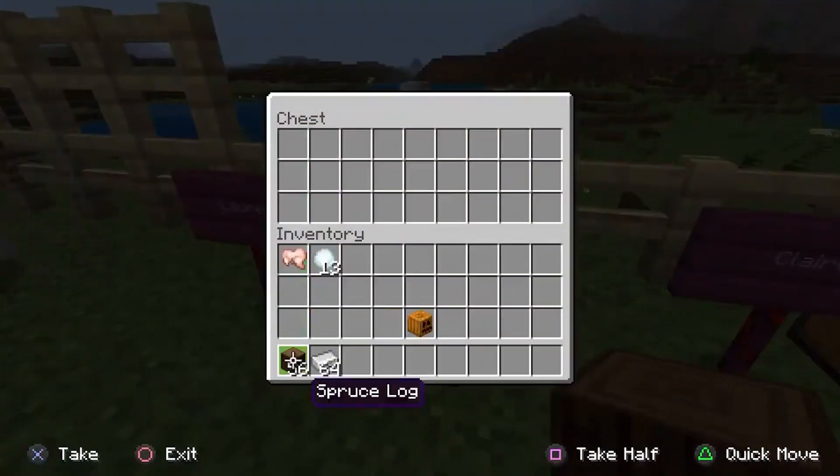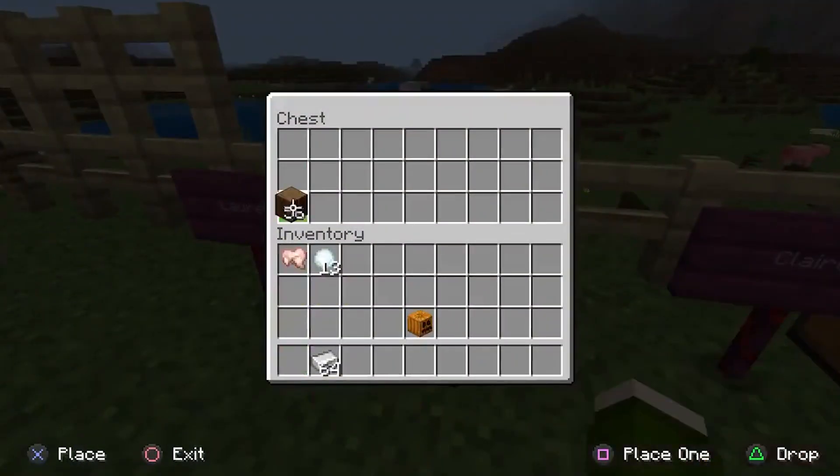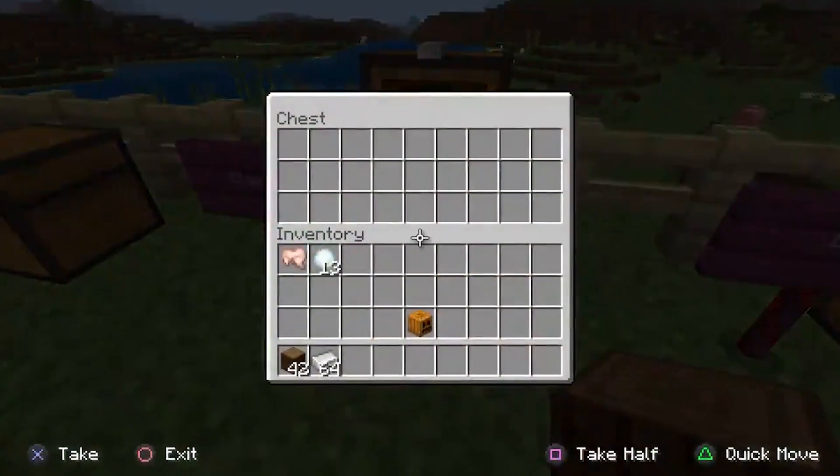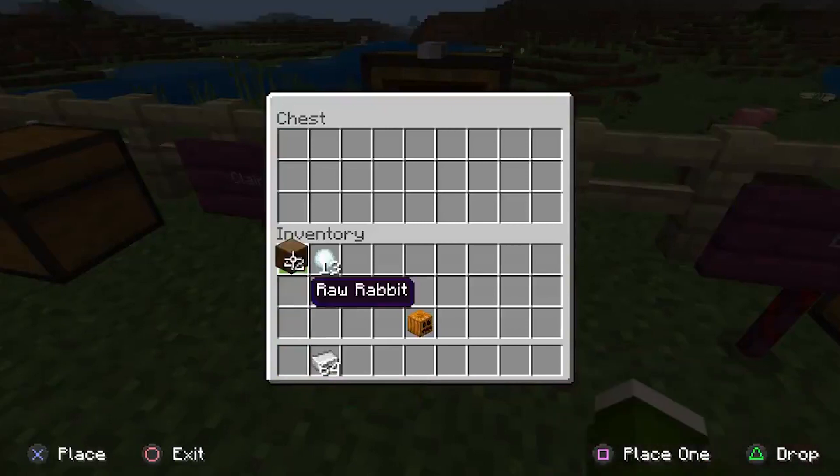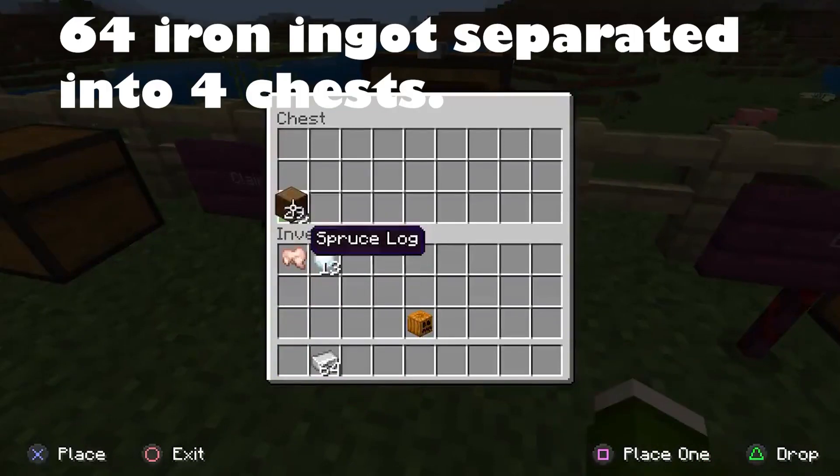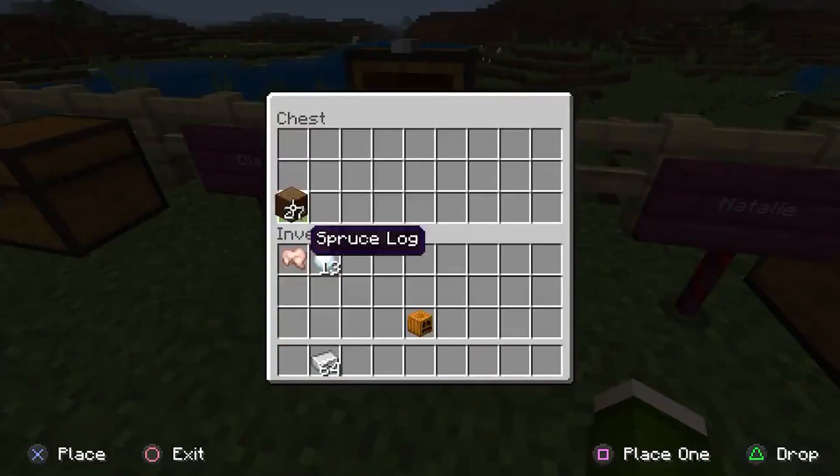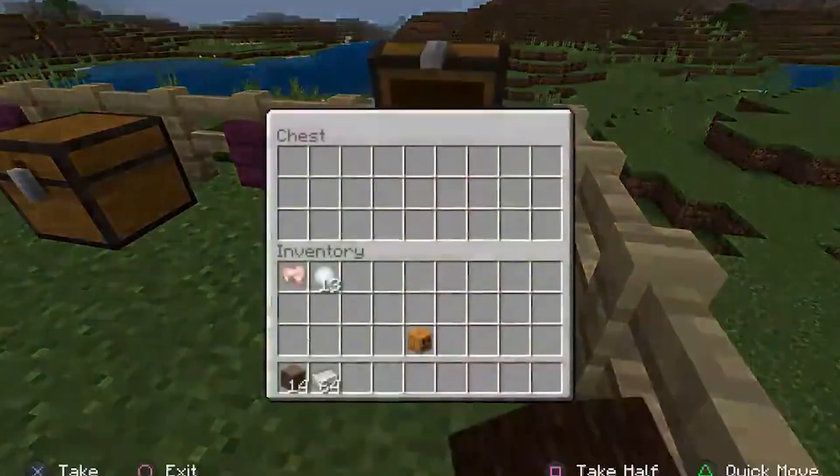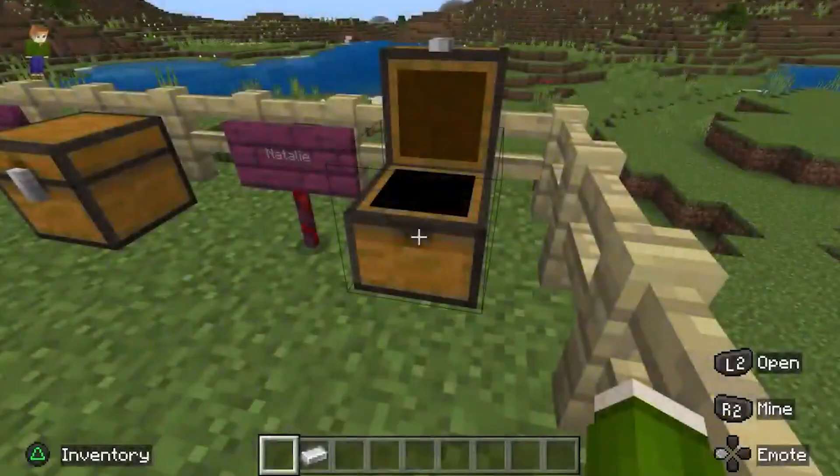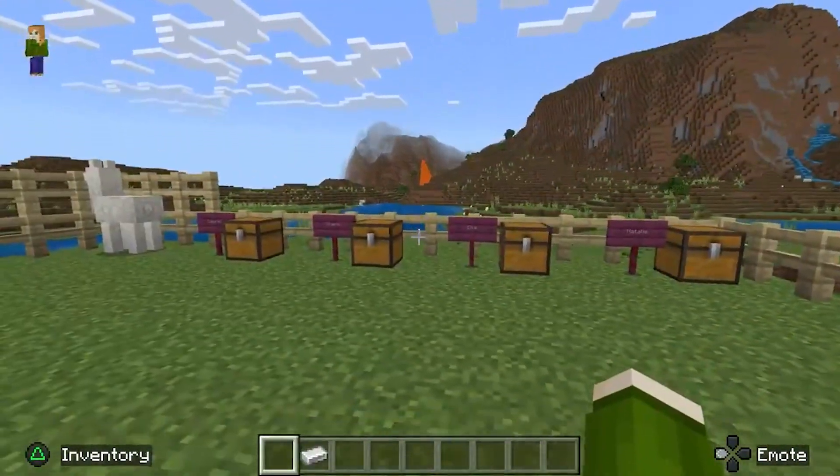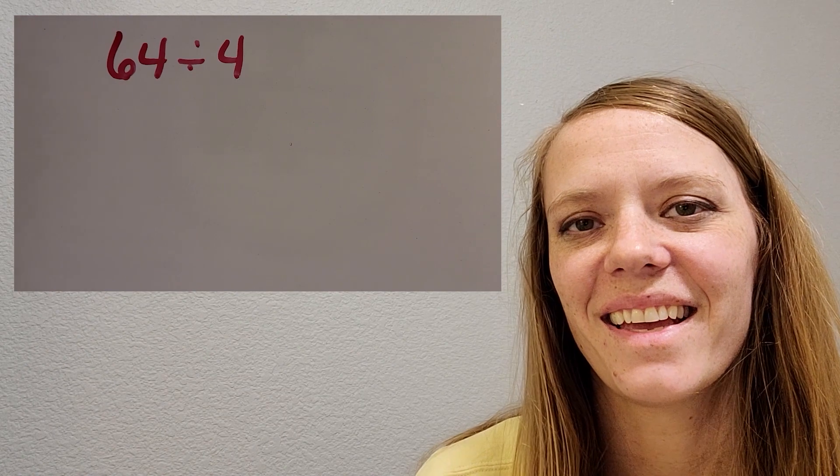All right. Now we can come back and give Laurel and each of the friends 14 logs, like we just figured out. And after we're done with this, we can figure out, since we have 64 iron ingot, we are going to figure out how much each of the friends will get of iron ingot.